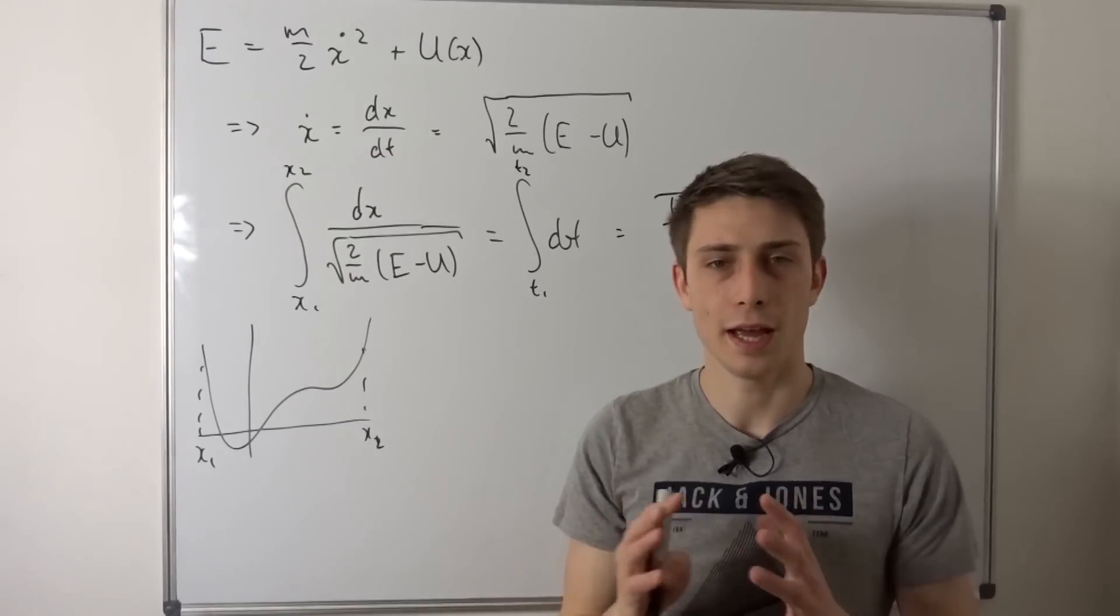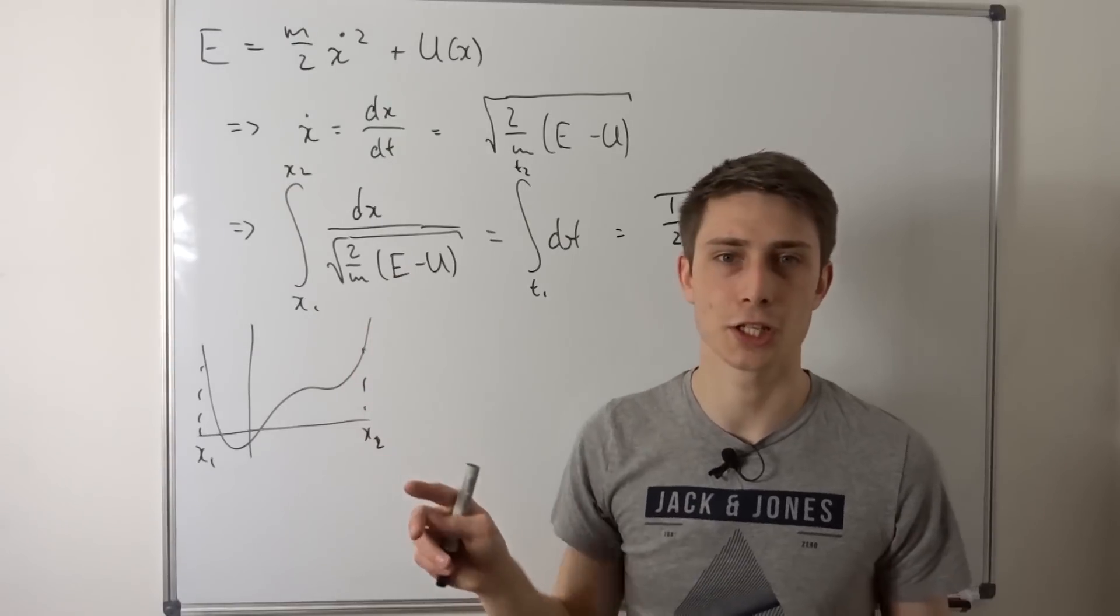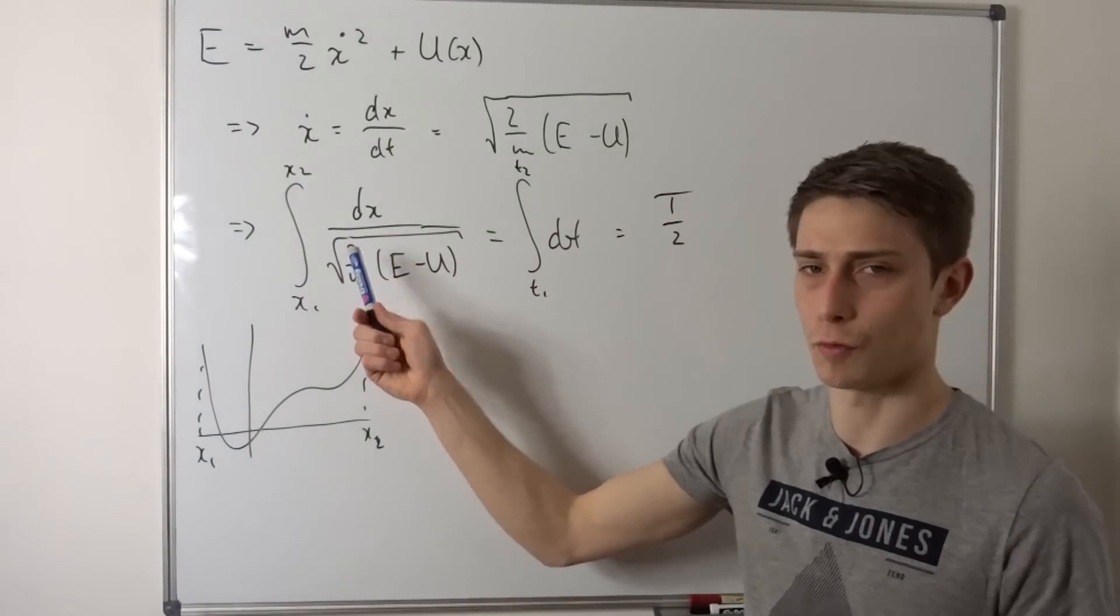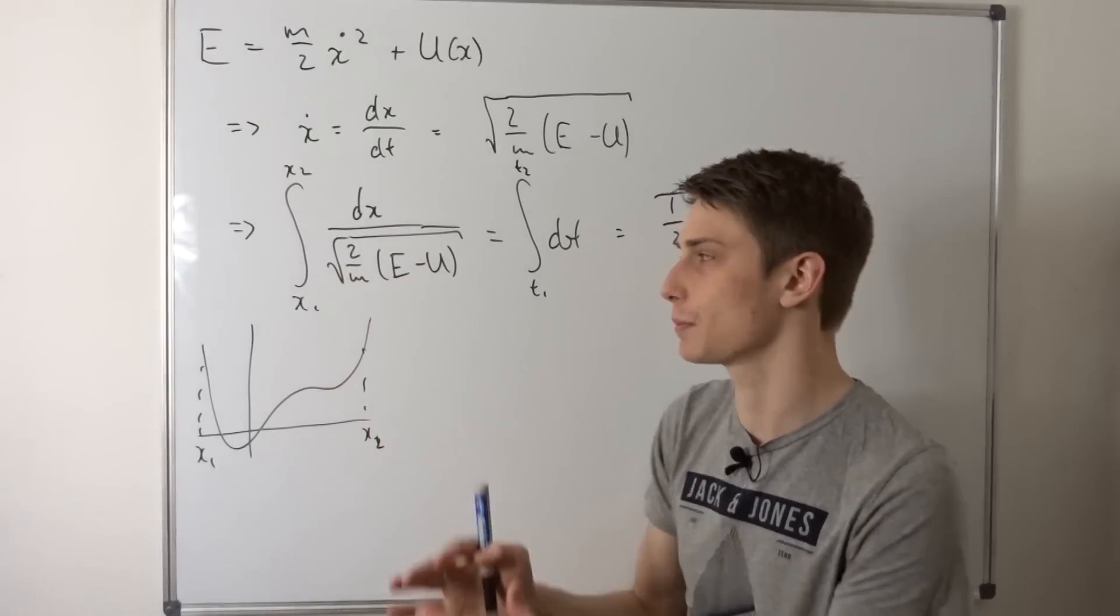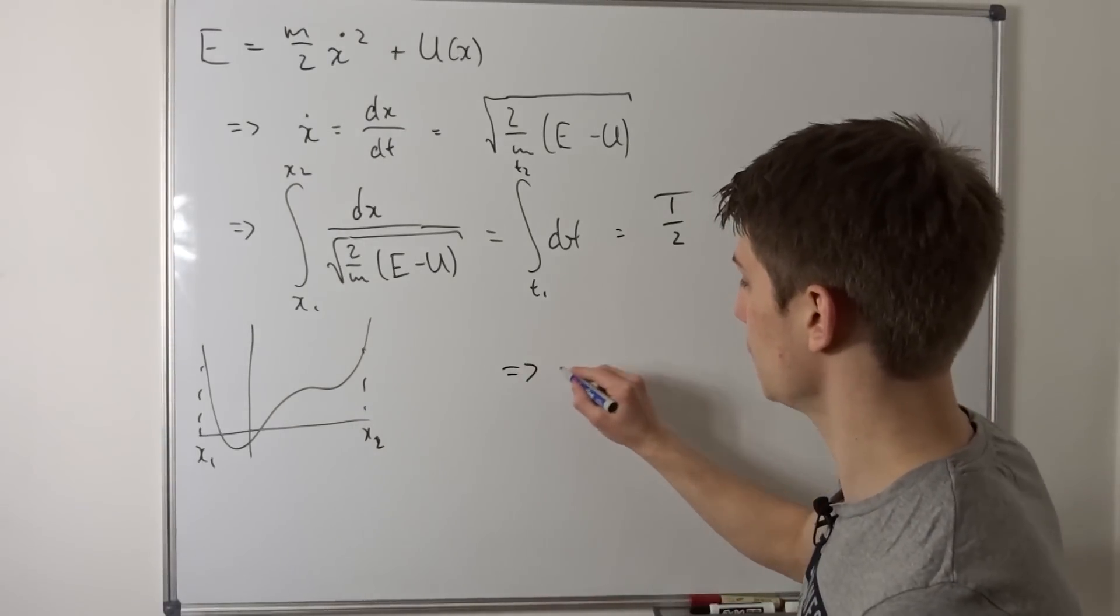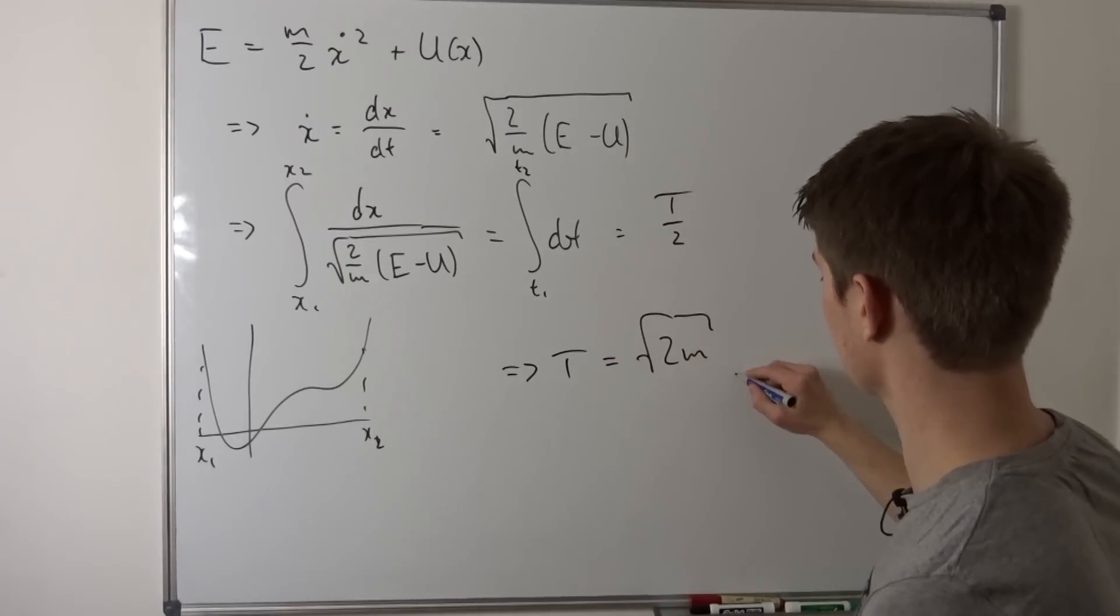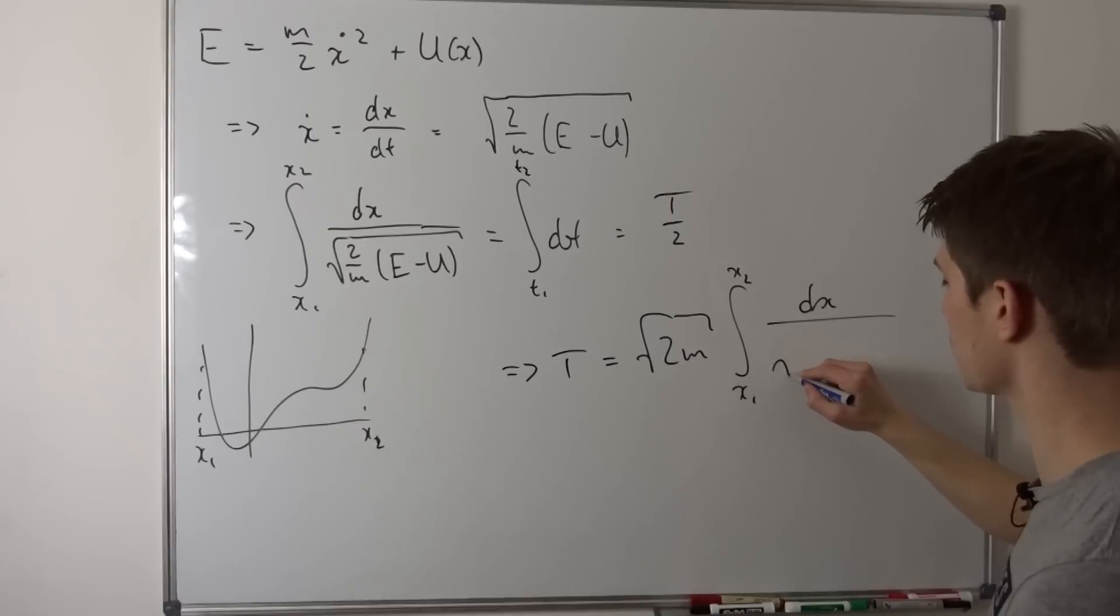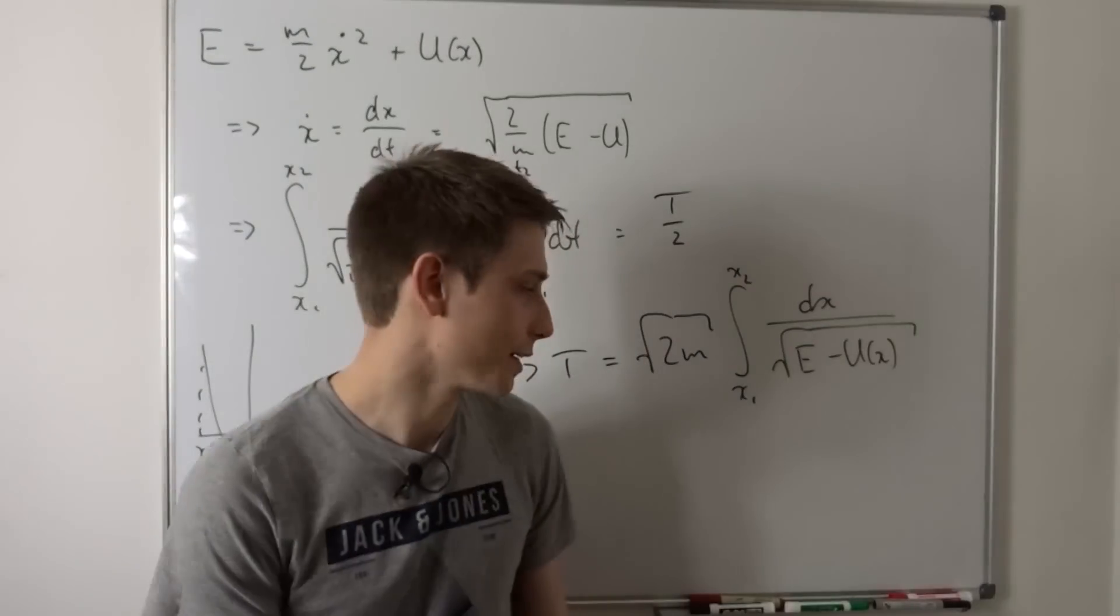So that means we also have to integrate from x1 to x2 right here. We can't simplify it any further, to be honest, because we don't have any information about the potential or the whole energy or x1 and x2. So all we can do is bring this 1 over square root 2 over m to the outside. Both are positive, both factors, so we can break up the square root. We can take the reciprocal and we can multiply both sides by 2. So what we end up with is an expression for the period time is just the square root 2 times m times the integral from x1 to x2 of dx over square root e minus u in terms of x. And that's it.